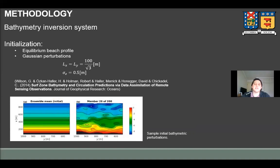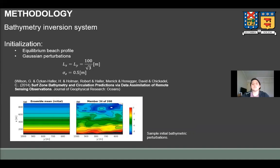Now, specifically to initialize the data assimilation system, the initial bathymetric ensemble was modeled as an equilibrium beach profile to which we added perturbations sampled from a Gaussian distribution with its own length scales. These length scales are in agreement with the ones used by Wilson et al. 2014, on whose work this method is largely based.